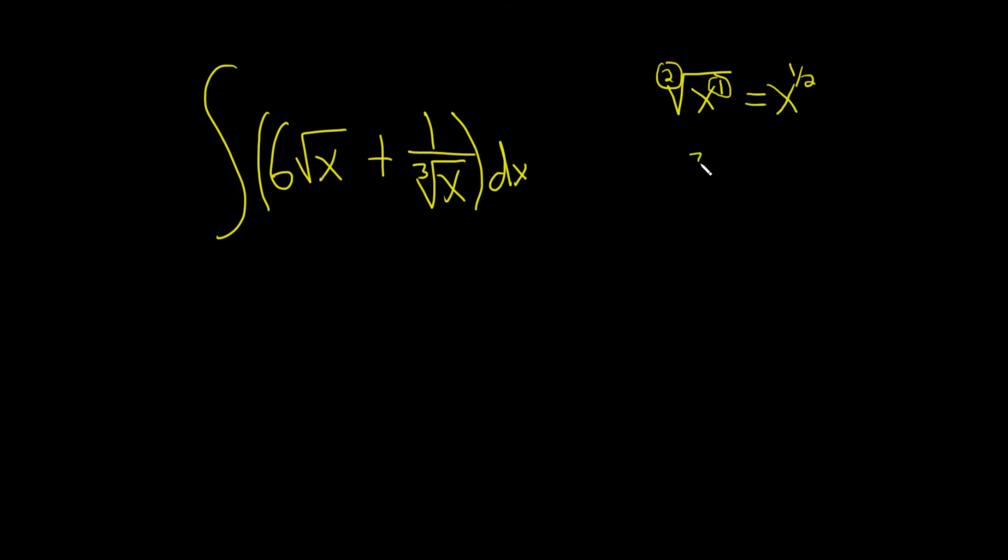Over here we have a cube root of x, and again there's really a 1 here, and it's this number over this number, so in this case it's 1 over 3. As a first step, let's go ahead and make those substitutions.